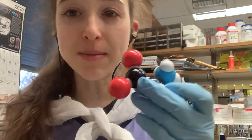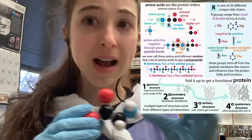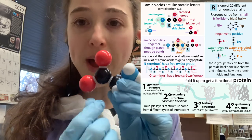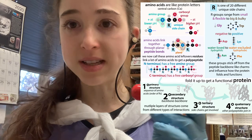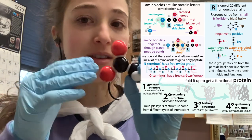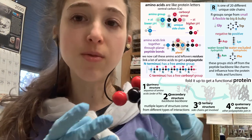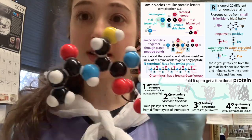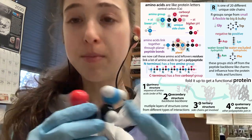Glycine is the first amino acid I'm going to talk about in my 20 days of amino acids. Amino acids are protein letters, among other things, and they all have the same general backbone structure with a carboxyl group and an amino group, which they use to link together in peptide bonds. In addition to those generic parts, they have unique side chains or R groups that stick off — these distinguish them and influence how the protein folds.